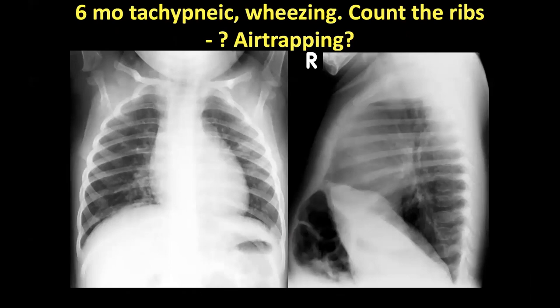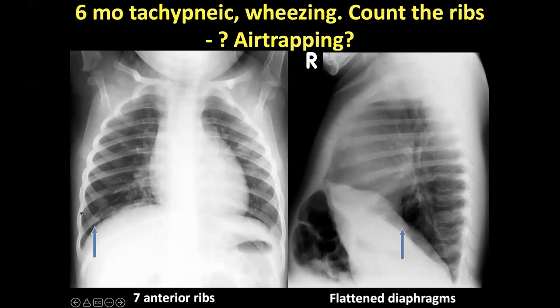If we do have a correctly positioned and well-inspired X-ray, when we see more than five anterior ribs — in this case seven — we can confidently say that there is air trapping, most commonly from peripheral airways obstruction in children. If you do have a lateral, that can be confirmed by looking at flattened diaphragms or increased retrosternal air.